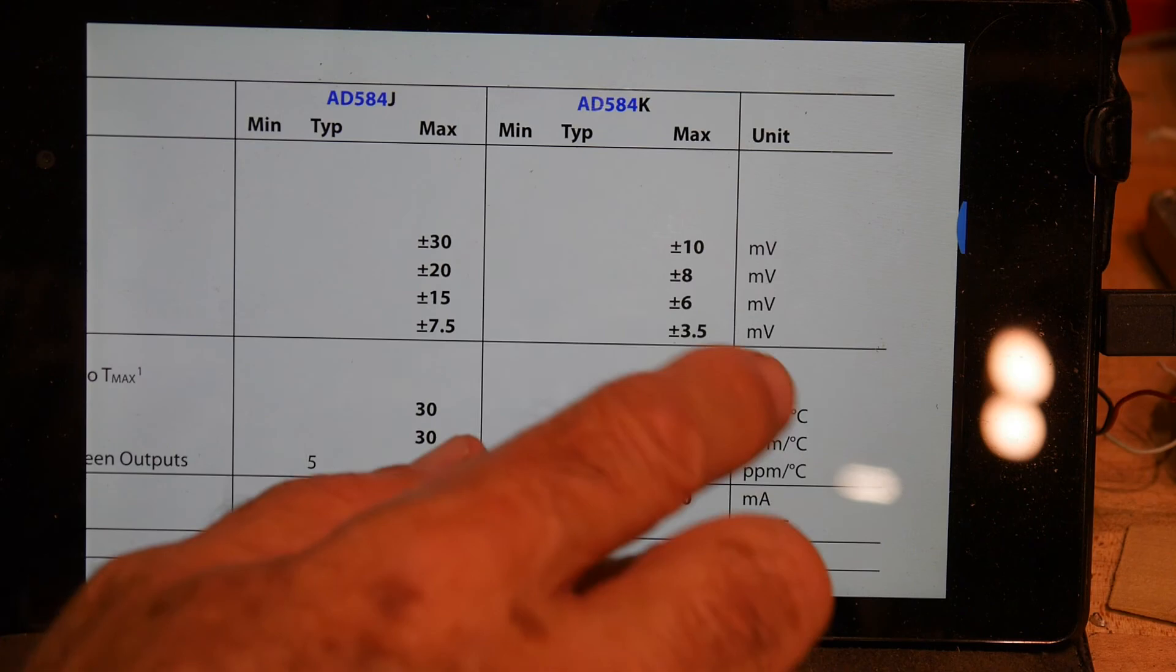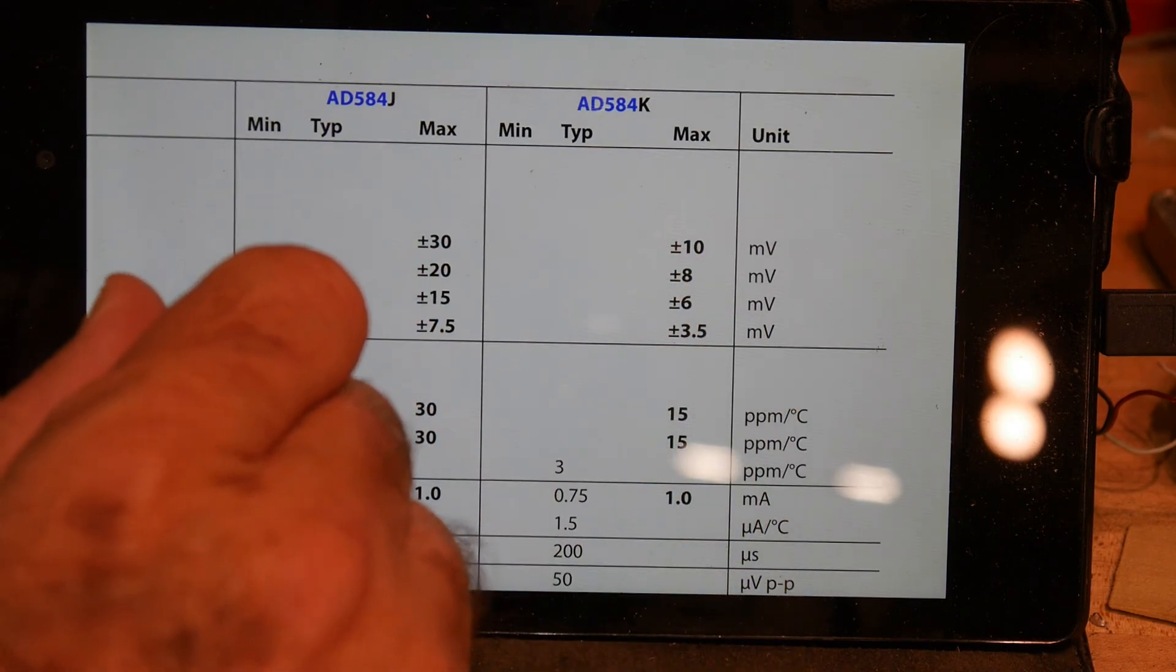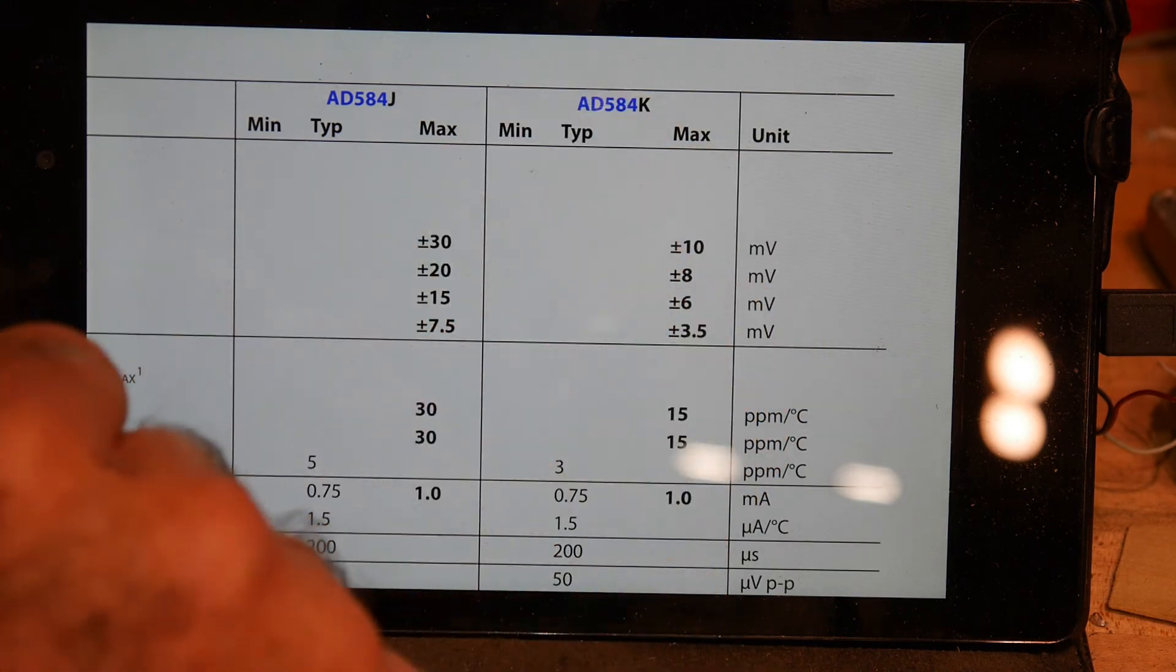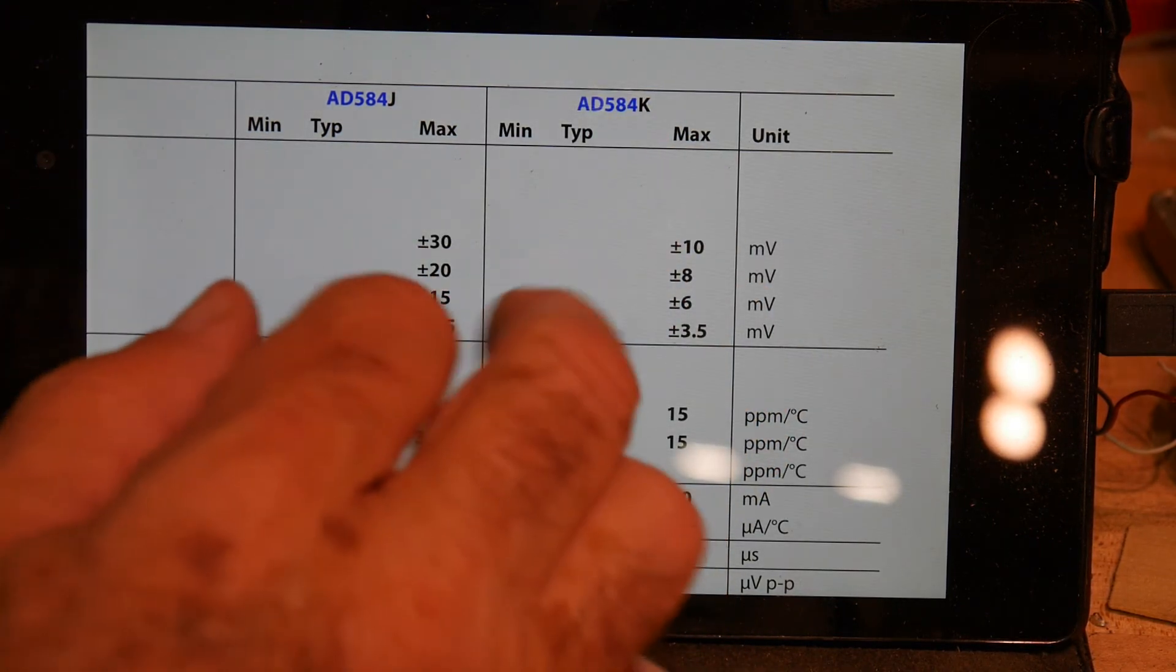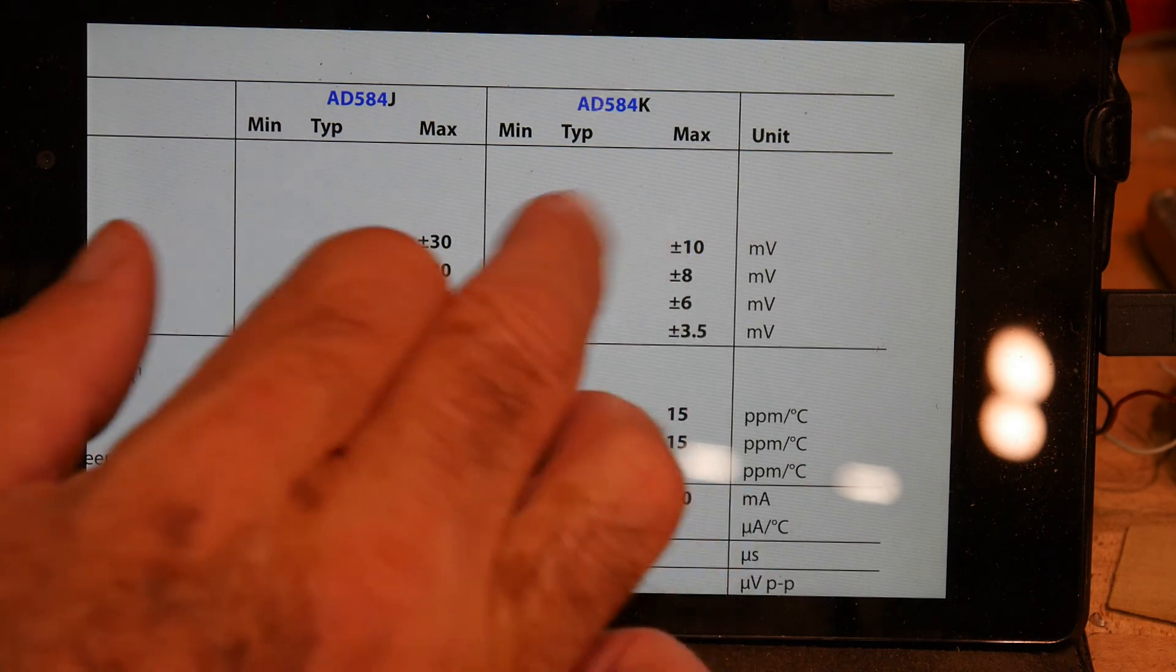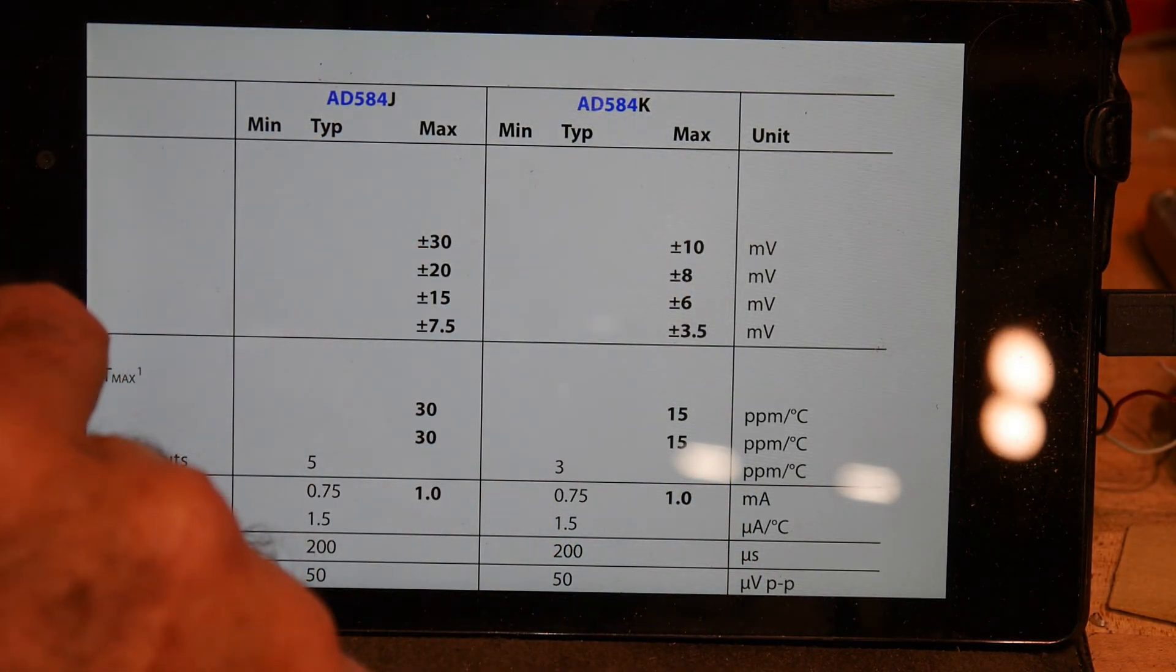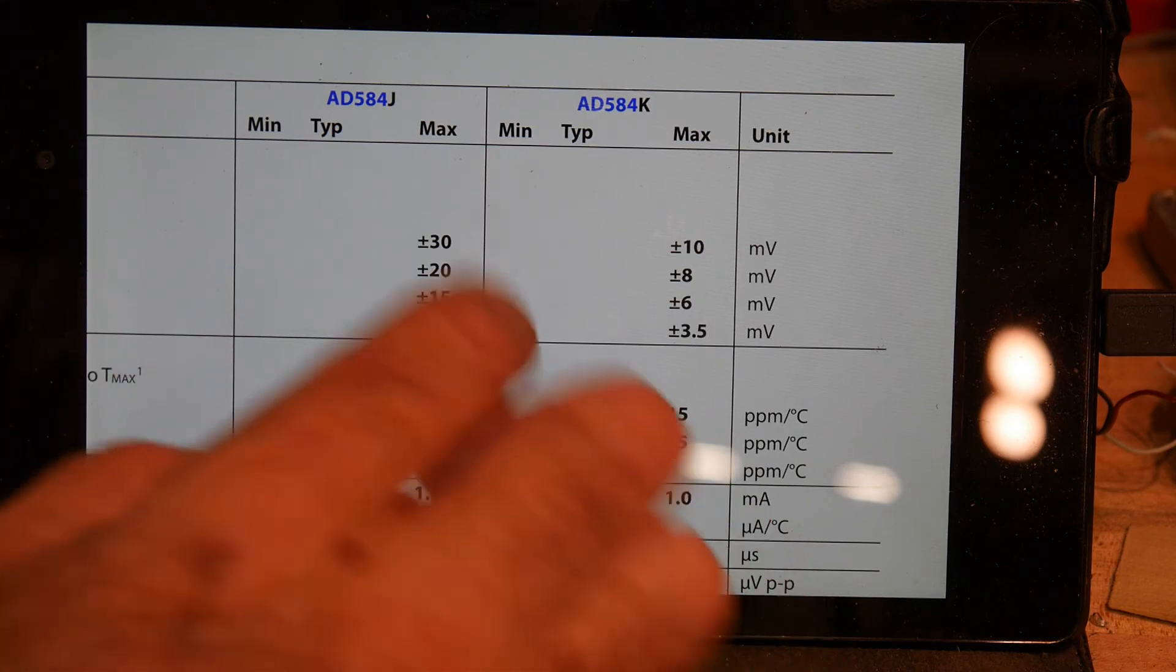And it's good to plus or minus 10 millivolts. That's not as good as the other ones. The other ones were like plus or minus 3, plus or minus 2 for really good ones and stuff. So this isn't as good as an absolute device.